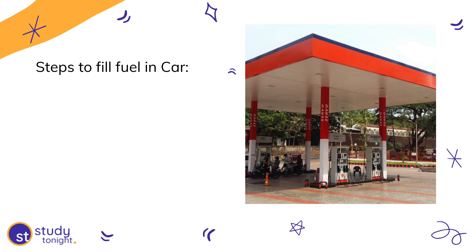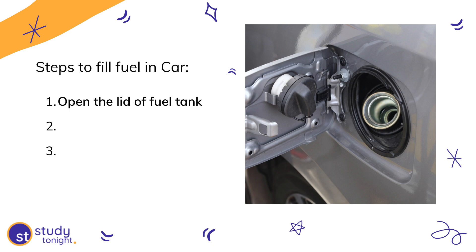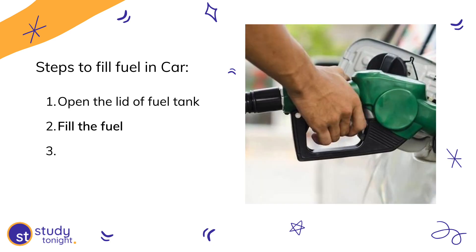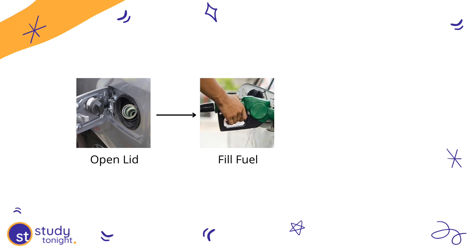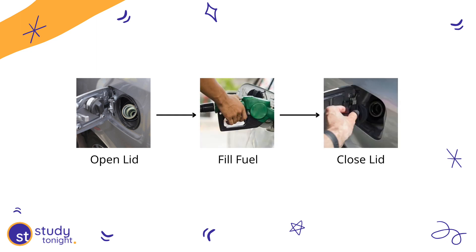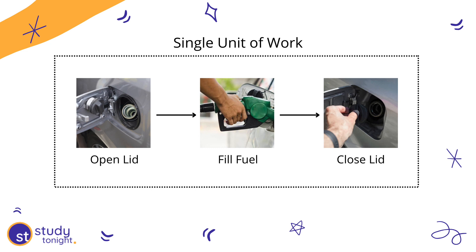Let's start with a simple example. If I ask you to fill fuel in your car by yourself at a fuel station, then in order to do it, you'll have to open the lid of the fuel tank, fill the fuel, and then close the lid back. Opening the lid, filling the petrol or diesel — whatever your car supports — and then closing the lid is a single unit of work. All these three steps have to be done together. You cannot miss any single step, otherwise there'll be some problem.